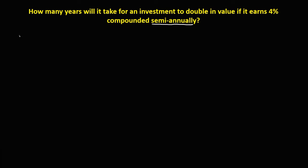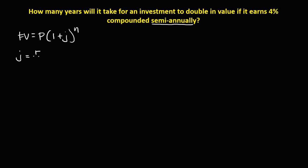The formula for future value in compound interest is the principal times 1 plus J to the power N, where J is the interest per period — that's the rate over the compounding period — and N is the number of periods, which is the compounding period times the time.